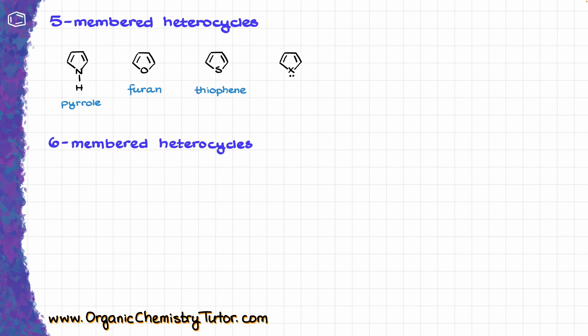When it comes to 6-membered rings, however, there are several different options that you might see, but most likely the only one you are actually going to see is pyridine. And when it comes to reactions of aromatic compounds — any kind, whether regular aromatics or heterocyclic compounds — the key is always going to be in resonance. So let's look at our 5-membered heterocycle and draw some resonance structures for it first.